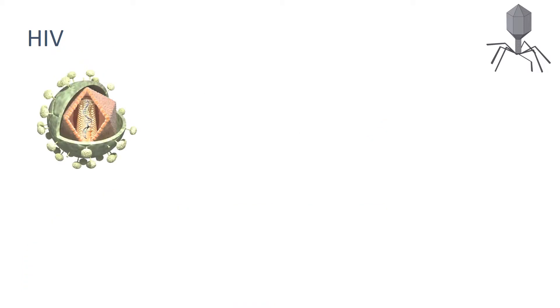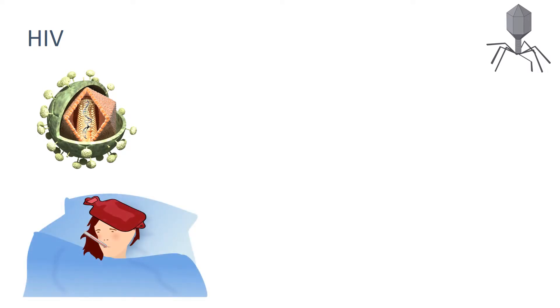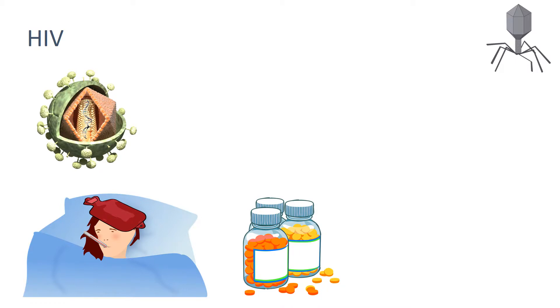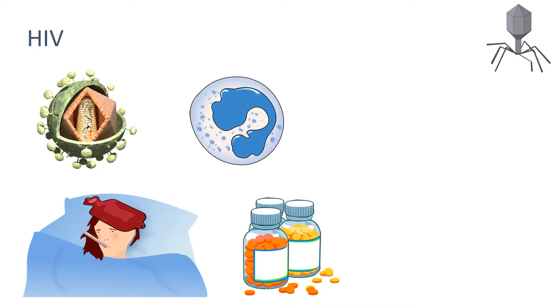HIV stands for human immunodeficiency virus. Initially it causes a flu-like illness. If it's not successfully controlled by antiretroviral drugs, then the virus will attack the body's immune cells. Late stage HIV infection, or AIDS, occurs when the body's immune system becomes so badly damaged it can no longer deal with other infections or cancers.